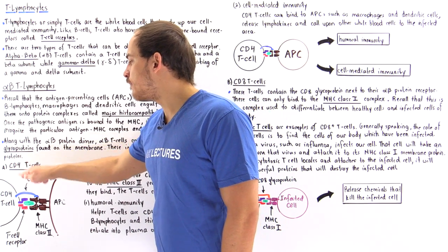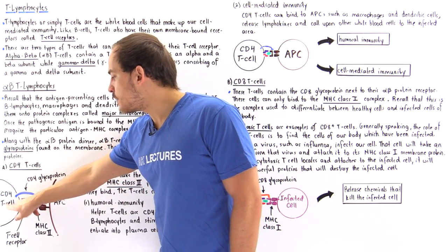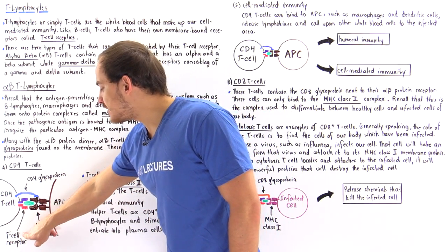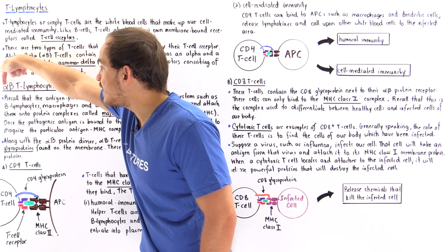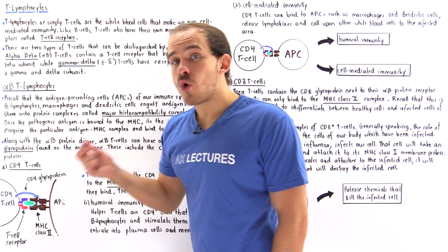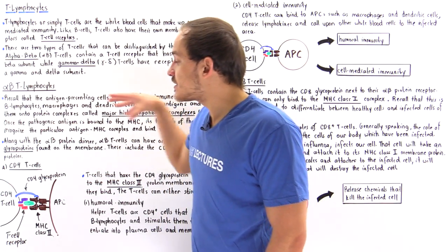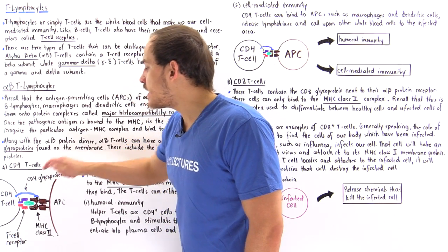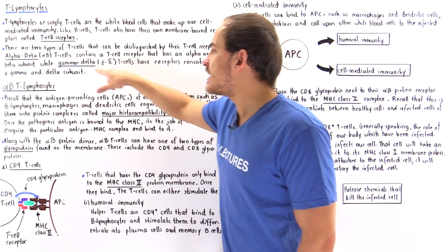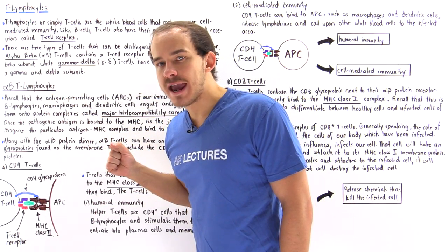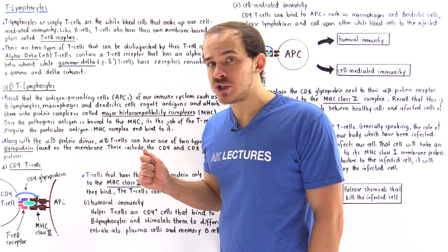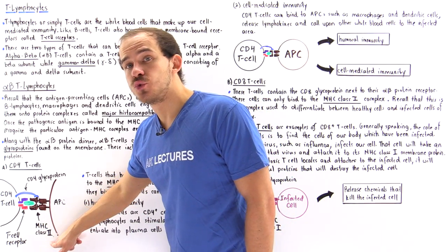Let's begin with the CD4 alpha-beta T cell. It contains a T cell receptor with an alpha unit shown in purple and a beta unit shown in red, and it also contains a special glycoprotein that extends from the cell membrane, shown in blue. Now let's suppose our APC, such as a macrophage, engulfs that pathogenic antigen and places it onto the MHC class II complex.